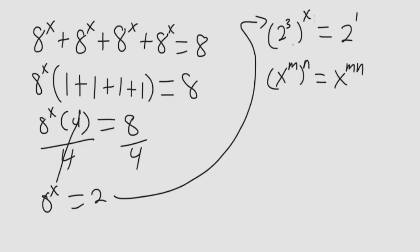So this multiplies across, we get 2 to the 3x is equal to 2 to the 1 power. Now that the bases are equal, we can set the exponents equal to each other, so we get 3x is equal to 1.